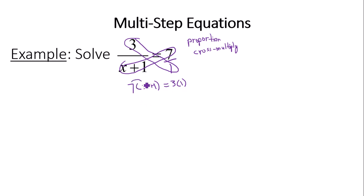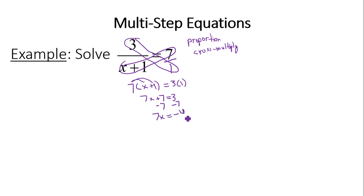That gives us 7x plus 7 equals 3. The variable term is on the left, so subtract 7 from both sides: 7x equals negative 4. The last step is to divide both sides by 7, giving x equals negative 4/7.